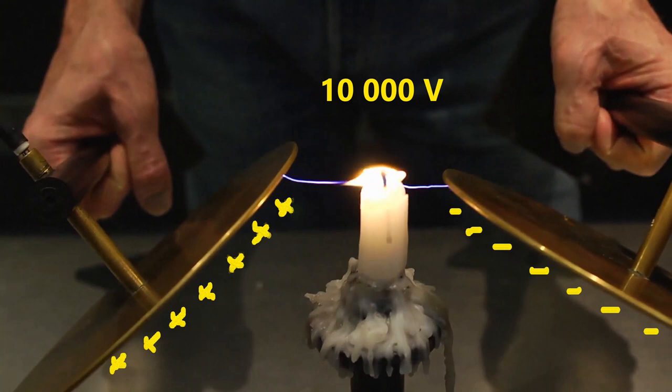The applied voltage across the two metal discs is 10,000V. The left metal disc is positively charged and the other one is negatively charged.